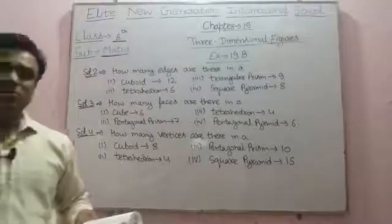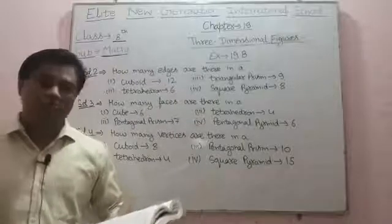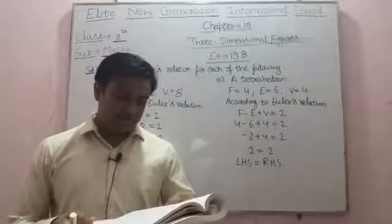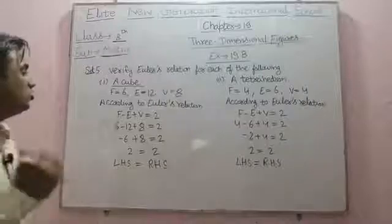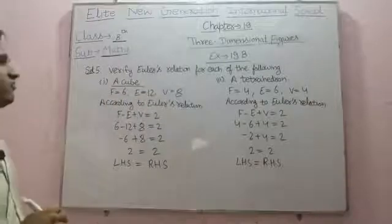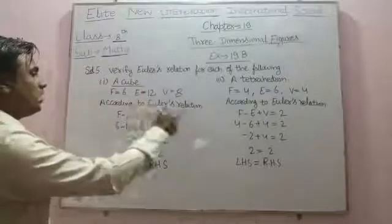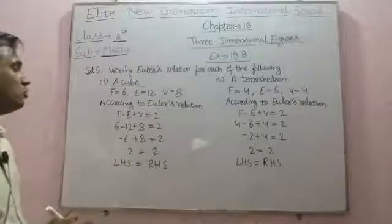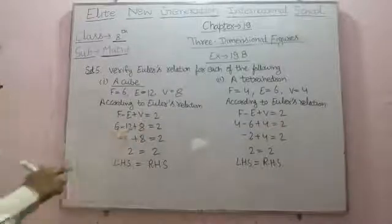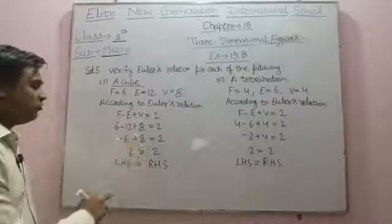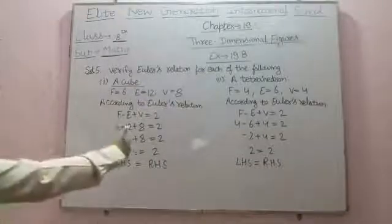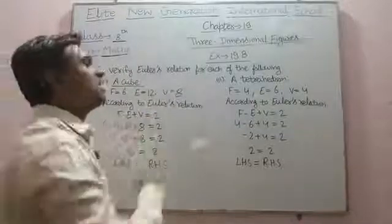In question number 5, we have to verify Euler's relation for each of the following. First, we have a cube. In a cube, the number of faces are 6, number of edges are 12, and number of vertices are 8. According to Euler's relation, F minus E plus V equals 2. Here the value of F is 6, value of E is 12, and value of V is 8. So 6 minus 12 plus 8 equals 2: 6 minus 12 gives minus 6, and minus 6 plus 8 equals 2. Therefore LHS equals RHS.